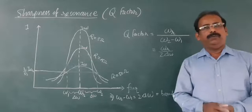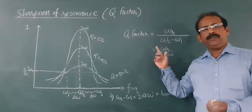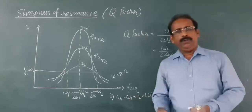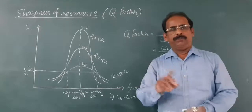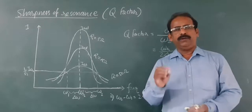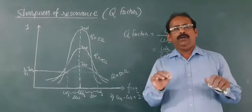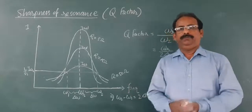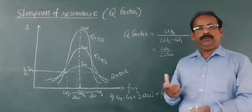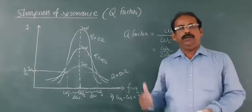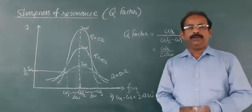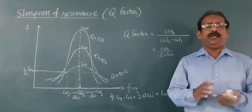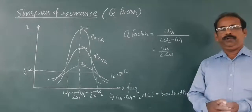The Q-factor is the ratio of resonance frequency to bandwidth. Bandwidth is the difference between the values of two frequencies on both sides of the resonance frequency where we get current equal to 1/√2 times the peak value. That difference is called bandwidth, and this ratio is called Q-factor. Q-factor is a pure number — a dimensionless and unitless quantity.